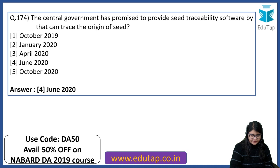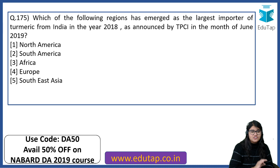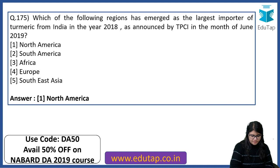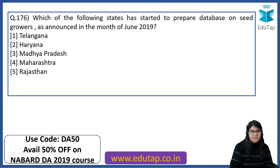Which region emerged as the largest importer of turmeric from India in the year 2018 as announced by TPCI in June 2019? The right answer is North America. Which state started preparing a database on seed growers as announced in June 2019? The answer is Telangana.